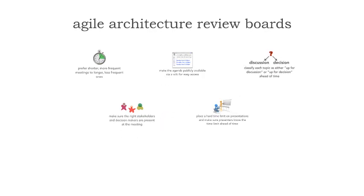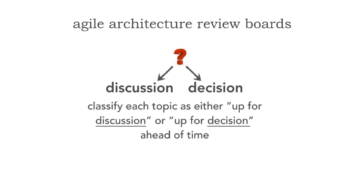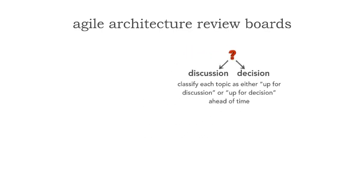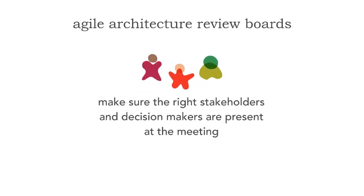The third tip is to classify each topic being presented as either up for discussion or up for decision, ahead of time. In our Wiki, within each meeting we have categories — a slot for discussion and a slot for decision. This is important: I may not be looking for a decision yet but rather a discussion. However, if we've already discussed it and I'm looking for a decision, that sets the stage and gives the Architecture Review Board information ahead of time to limit discussion. Most specifically, if something is up for decision, the mediator is responsible for making sure the right stakeholders and decision makers are present at that meeting.